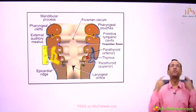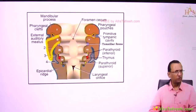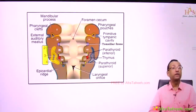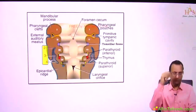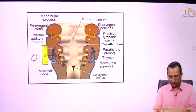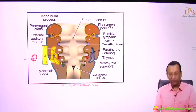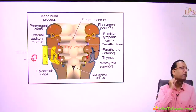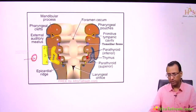Clefts 2, 3, and 4 were covered by mesoderm of the second arch and obliterated to form a cervical sinus. Then that opening closes to form a cervical cyst, and the cyst should disappear. If it does not disappear, it becomes a branchial cyst near the angle of the mandible — a surgical problem.